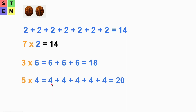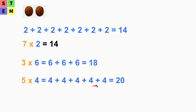Let's take a look at another one: five times four. We can write it as four plus four plus four plus four plus four — five times. Adding them together: four plus four is 8, eight plus four is 12, twelve plus four is 16, and sixteen plus four is 20. So five times four equals 20.